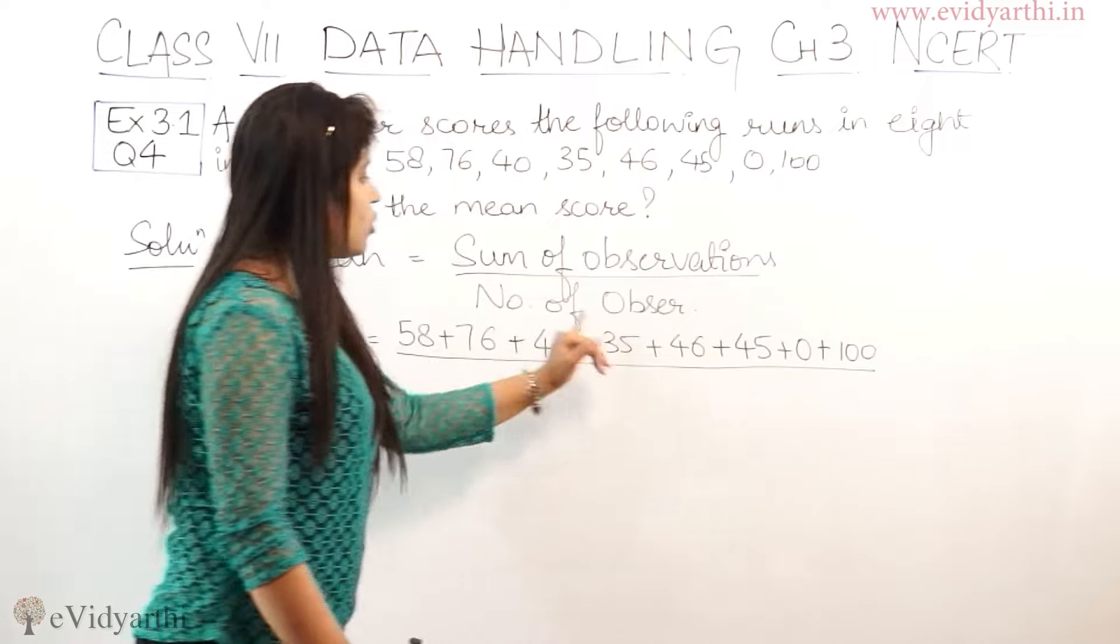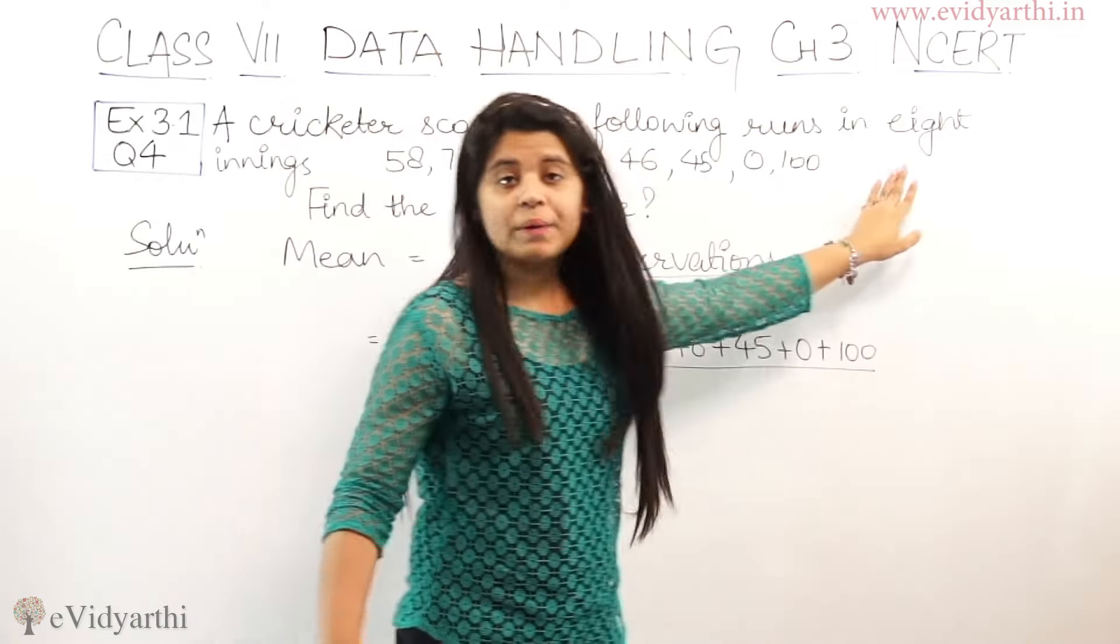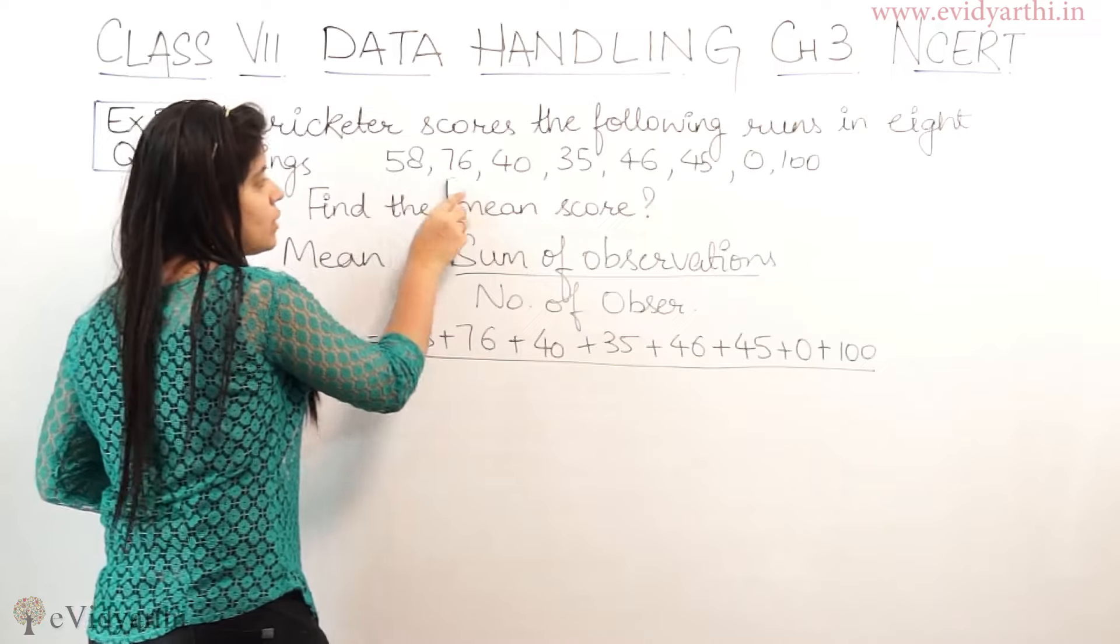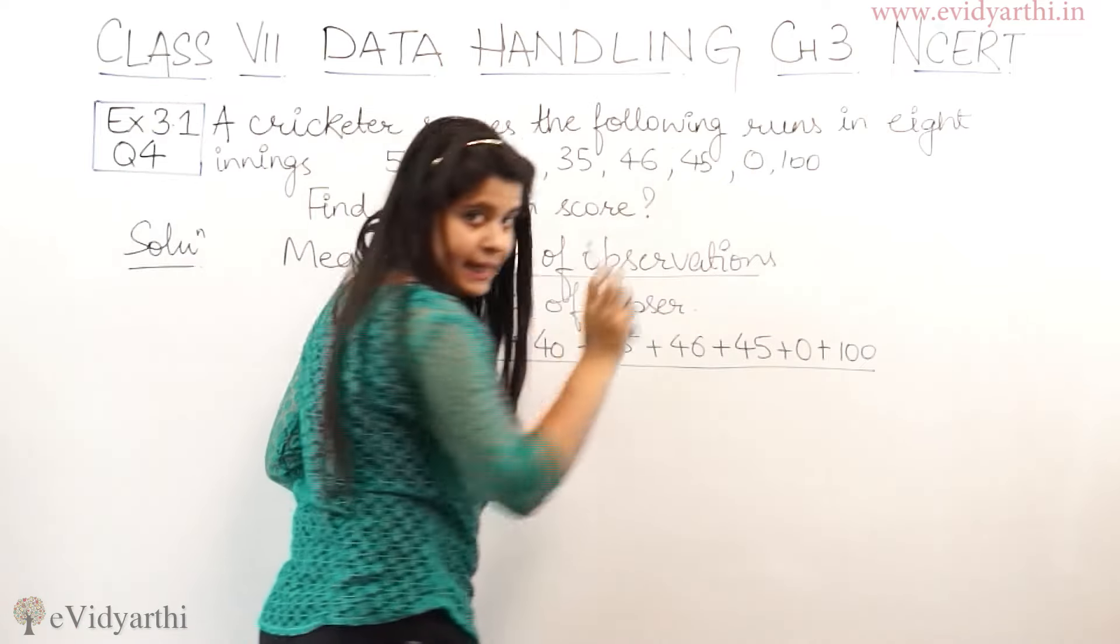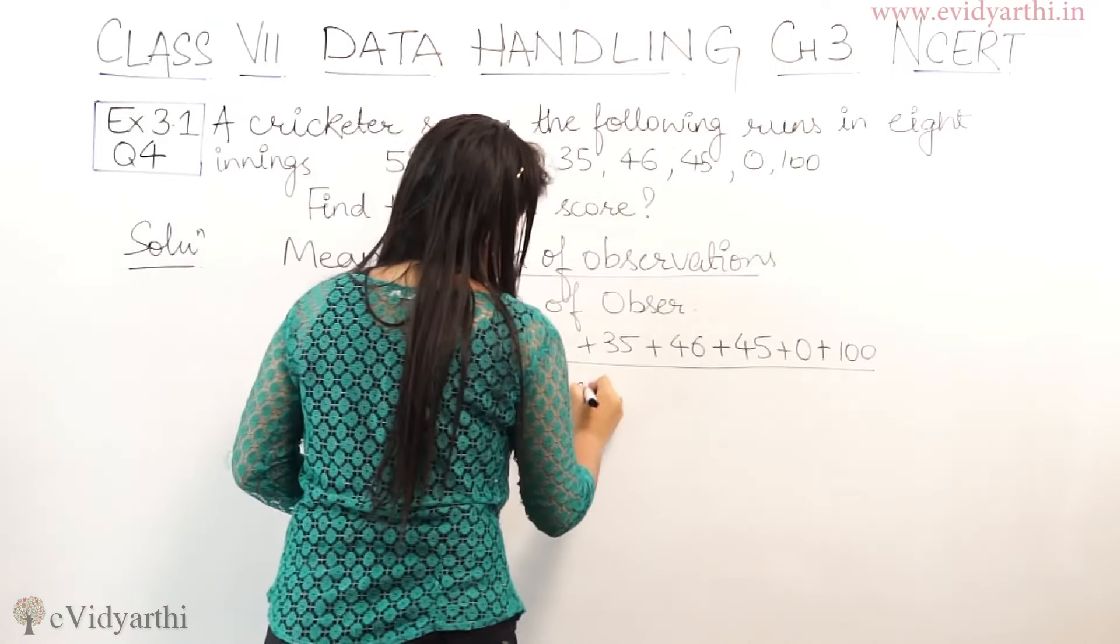It is given 8, but if you count here: 1, 2, 3, 4, 5, 6, 7, 8. So the number of observations is 8.